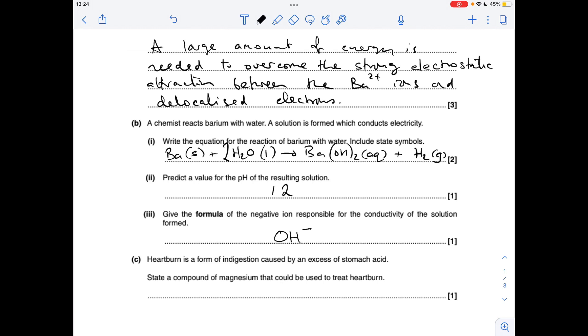Part C, state the compound of magnesium that could be used to treat heartburn. So we could either go for magnesium oxide, magnesium hydroxide, or magnesium carbonate.